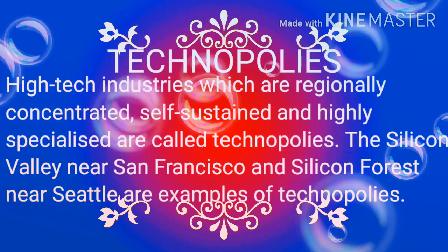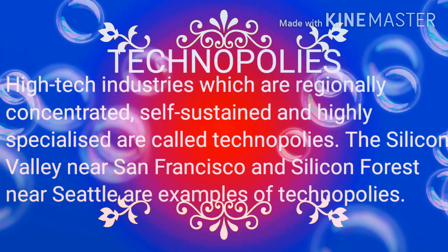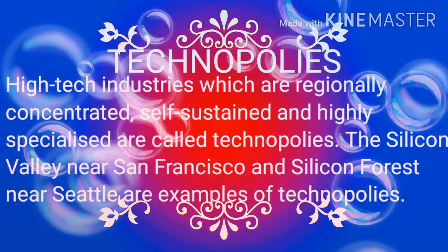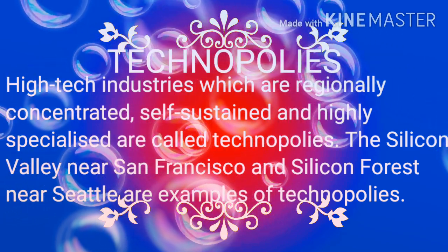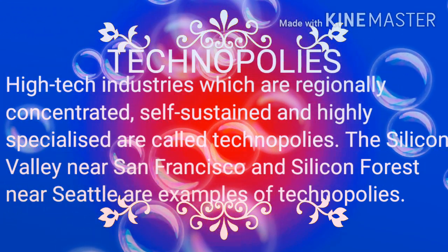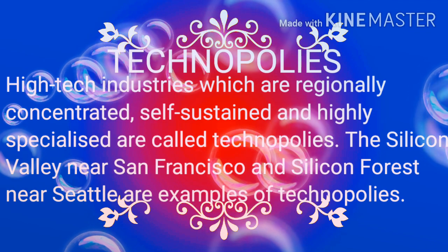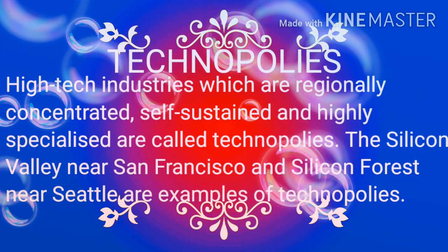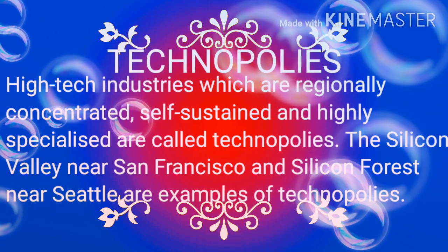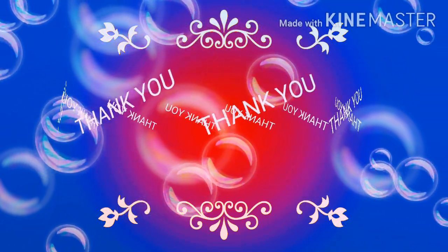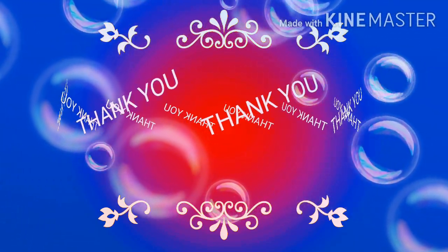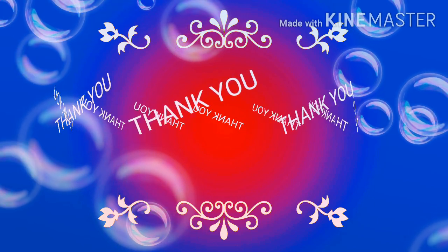Examples of high-tech industries include robotics on the assembly line, computer-aided design (CAD), electronic controls of smelting and refining processes, and new chemical and pharmaceutical products. High-tech industries that are reasonably concentrated, self-sustained, and highly specialized are called a technopolis. Silicon Valley near San Francisco and Silicon Forest near Seattle are examples of technopolis. In India, Bengaluru is an example of technopolis.